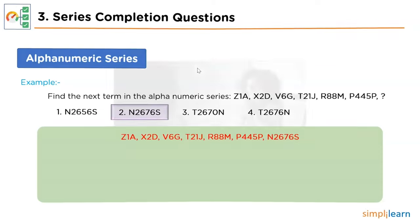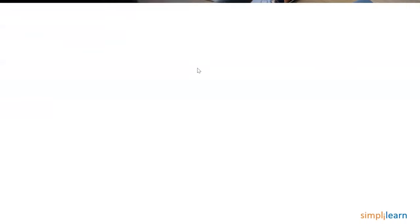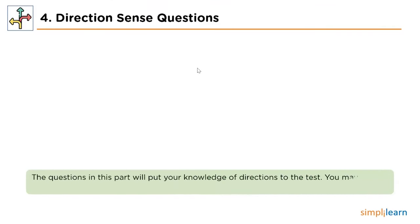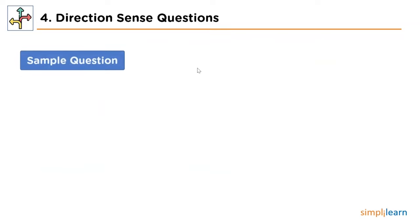Following this, we have direction sense. There are four main directions — east, west, north and south — and four cardinal directions: northeast, northwest, southeast and southwest. The questions in this section will test your understanding of these directions. You may also be asked to compute the shortest feasible distance between starting and ending points. Let's look at one sample question.